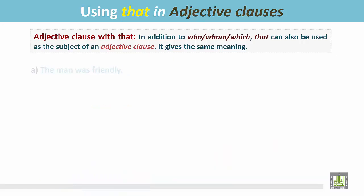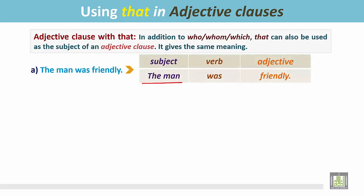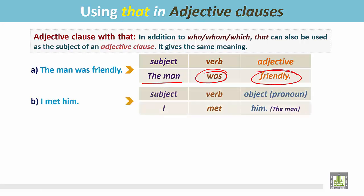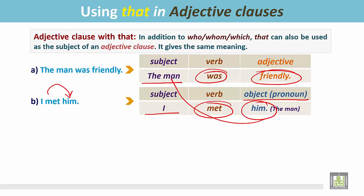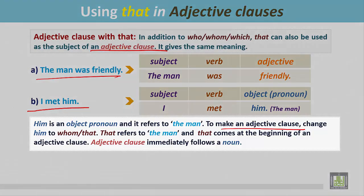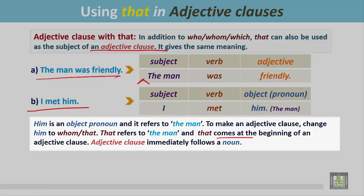See another example. The man was friendly. The man is the subject, followed by the be verb in the past, and then the adjective, friendly. I met him. In this sentence, I is the subject, the verb is met, and him is the object of this verb. And him refers to the man. To make an adjective clause, change 'him' into 'whom' or 'that', since that refers to the man. It comes at the beginning of an adjective clause.